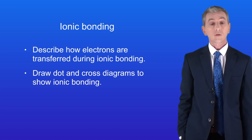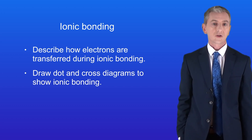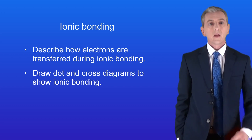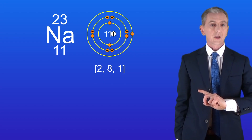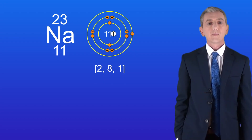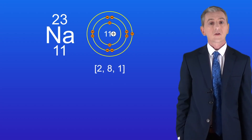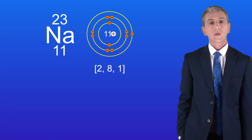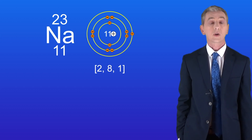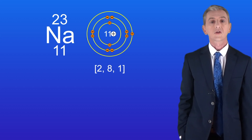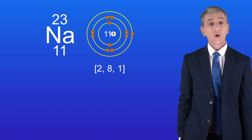We've seen that electrons exist in energy levels. This shows the electrons in the element sodium. Remember that the first energy level can hold two electrons, the second and third energy levels can hold eight electrons each, and the fourth energy level can hold 18.